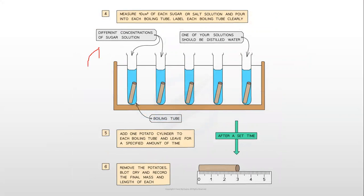Measure the mass of each sucrose solution and pour into each boiling tube. Label each boiling tube clearly. Each potato cylinder goes in a different concentration: 0.25, 0.5, 0.75, and 1.0.